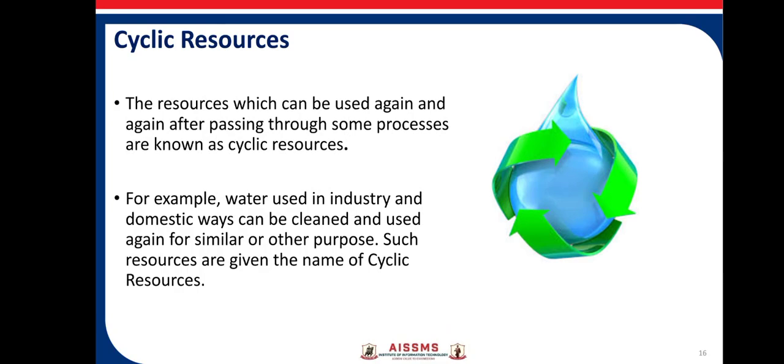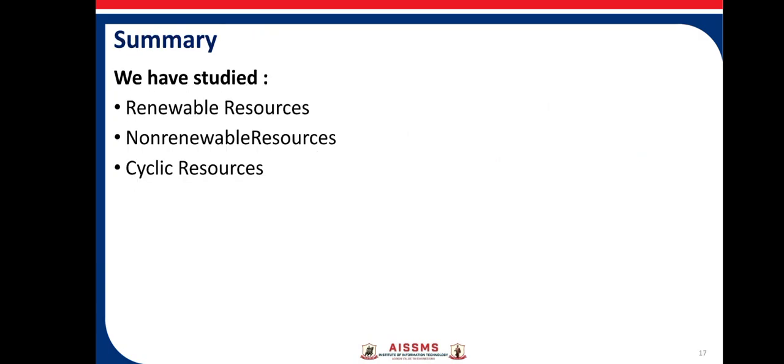The third type of resources are cyclic resources. Resources which can be used again and again after passing through some processes are known as cyclic resources. For example, water used in industry and domestic waste can be cleaned and used again for similar or other purposes.